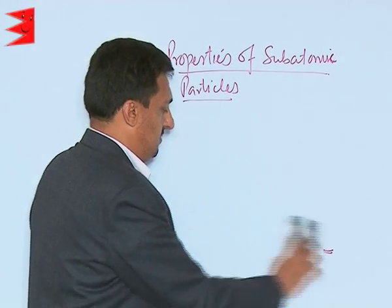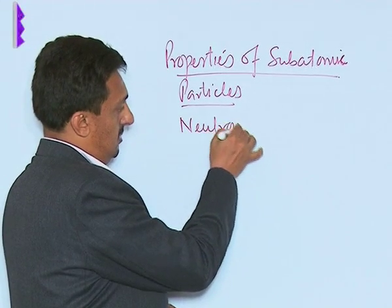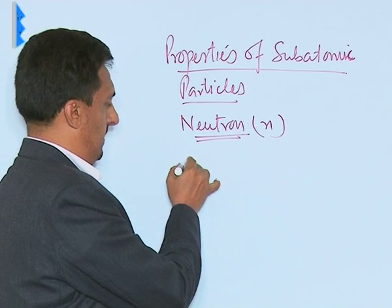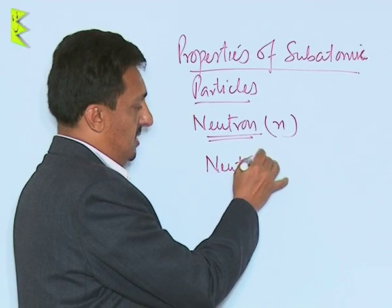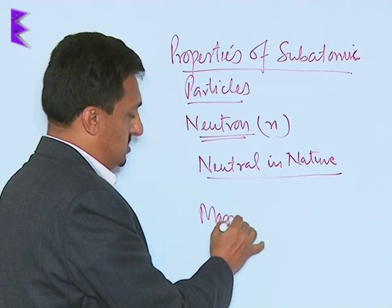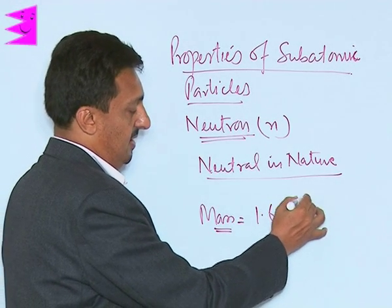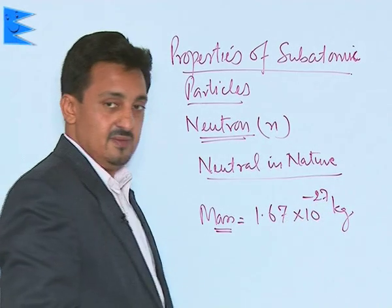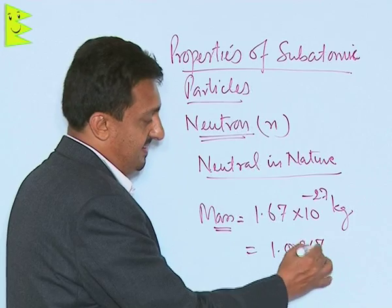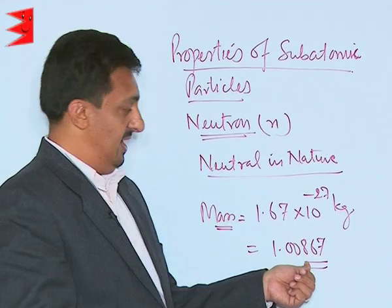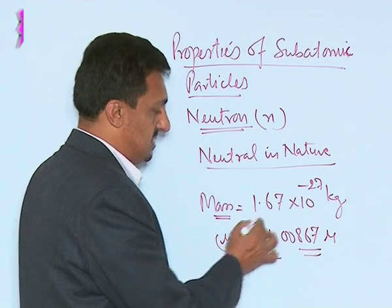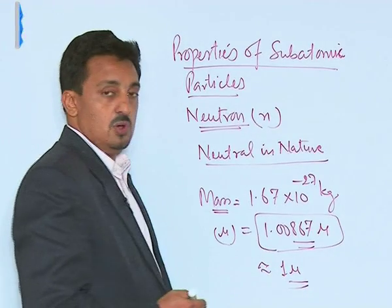The last fundamental subatomic particle is the neutron, given the symbol N. The neutron has no charge — it is neutral in nature. The mass of this particle is 1.67 × 10⁻²⁷ kg, very similar to the proton, but in unified mass it is 1.00867 — compared to the proton's 1.00727 — so it is very slightly heavier than the proton. In unified mass units, it is again taken as approximately 1 U.